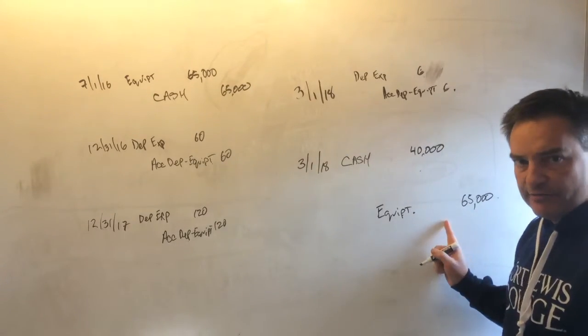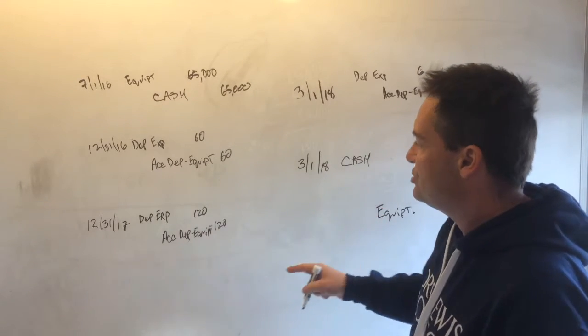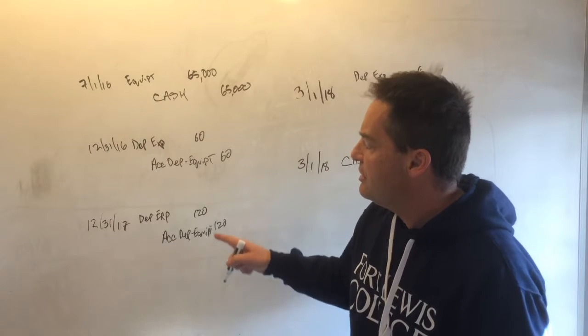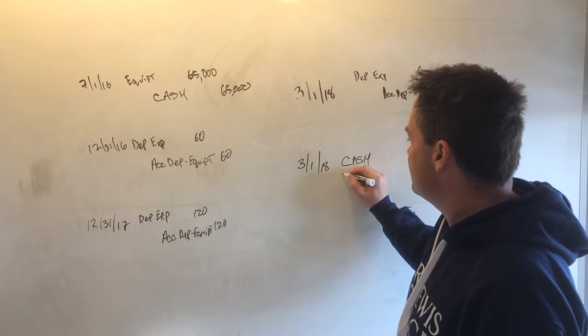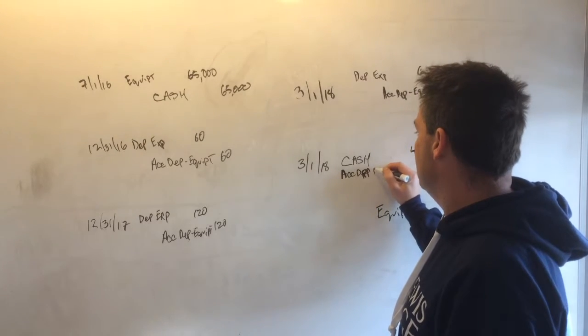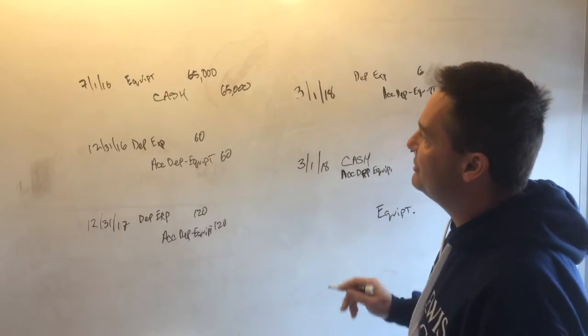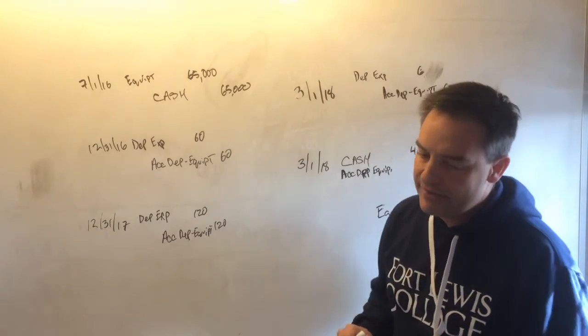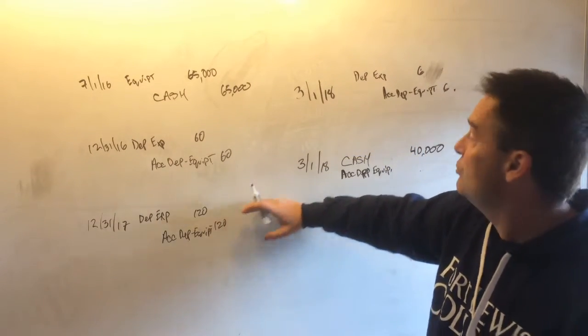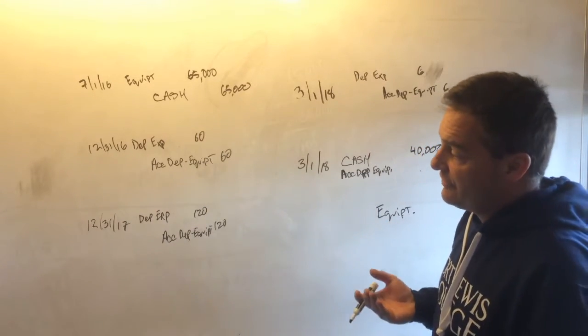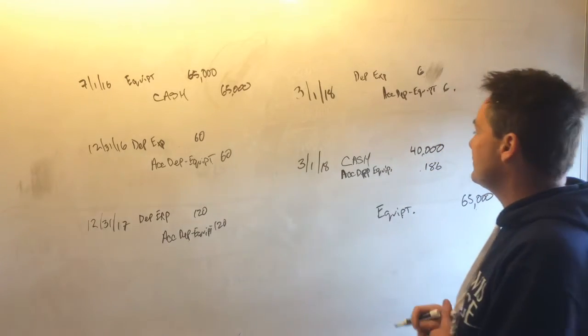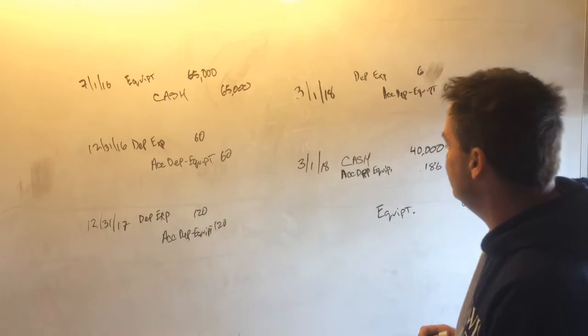Also, if you no longer have the piece of equipment, you should no longer have the accumulated depreciation. Remember, accumulated depreciation is a credit balance, it's a contra asset account. So in order to get rid of the accumulated depreciation, we're going to have to debit accumulated depreciation equipment for the amount that is in that account. You had $60 in year one, $120 in year two, and $6 in year three. So you've got $186 of accumulated depreciation, so we're going to debit the accumulated depreciation account for $186.